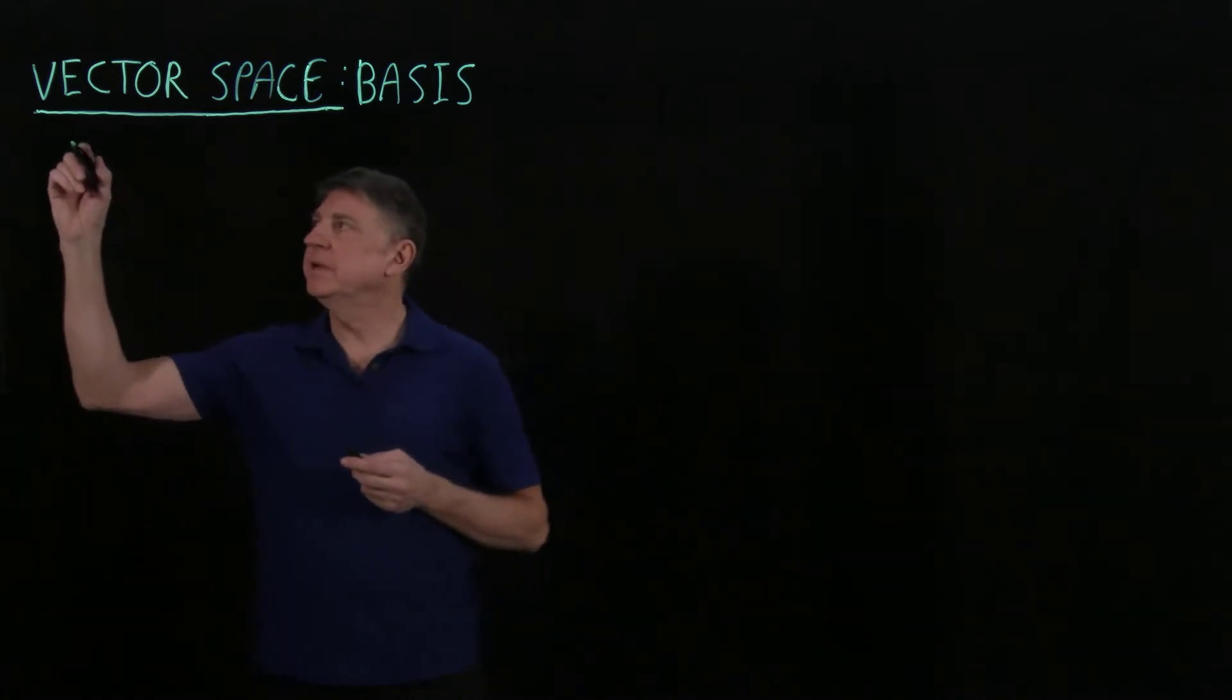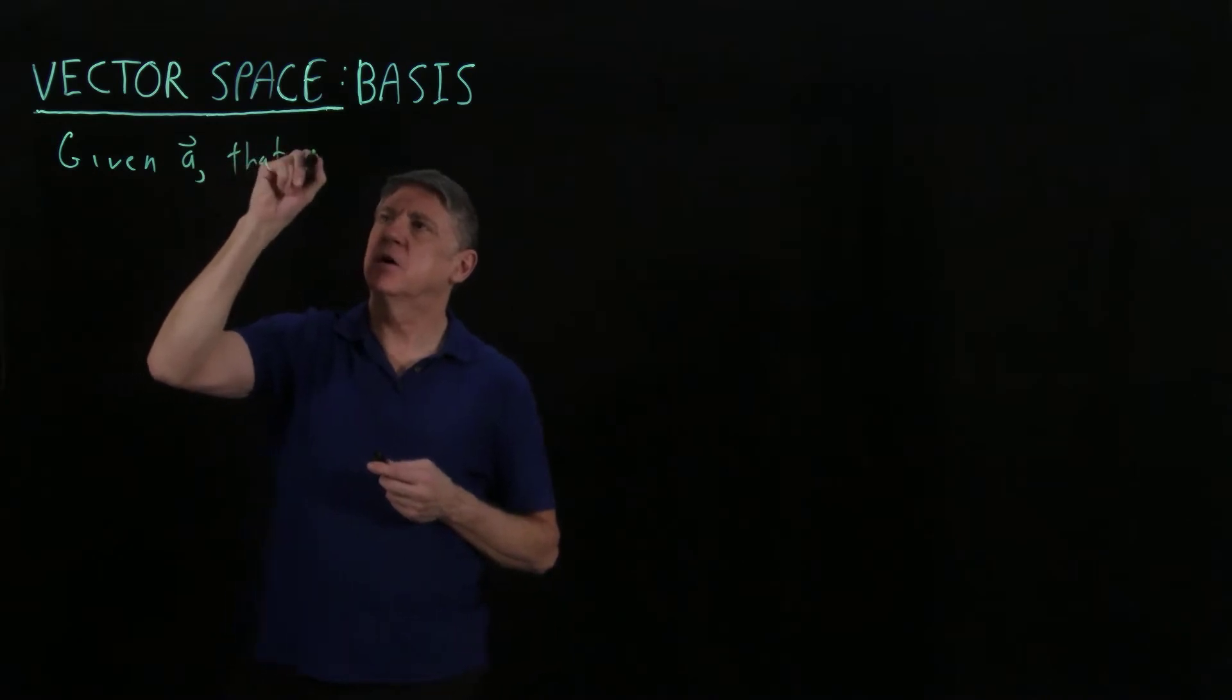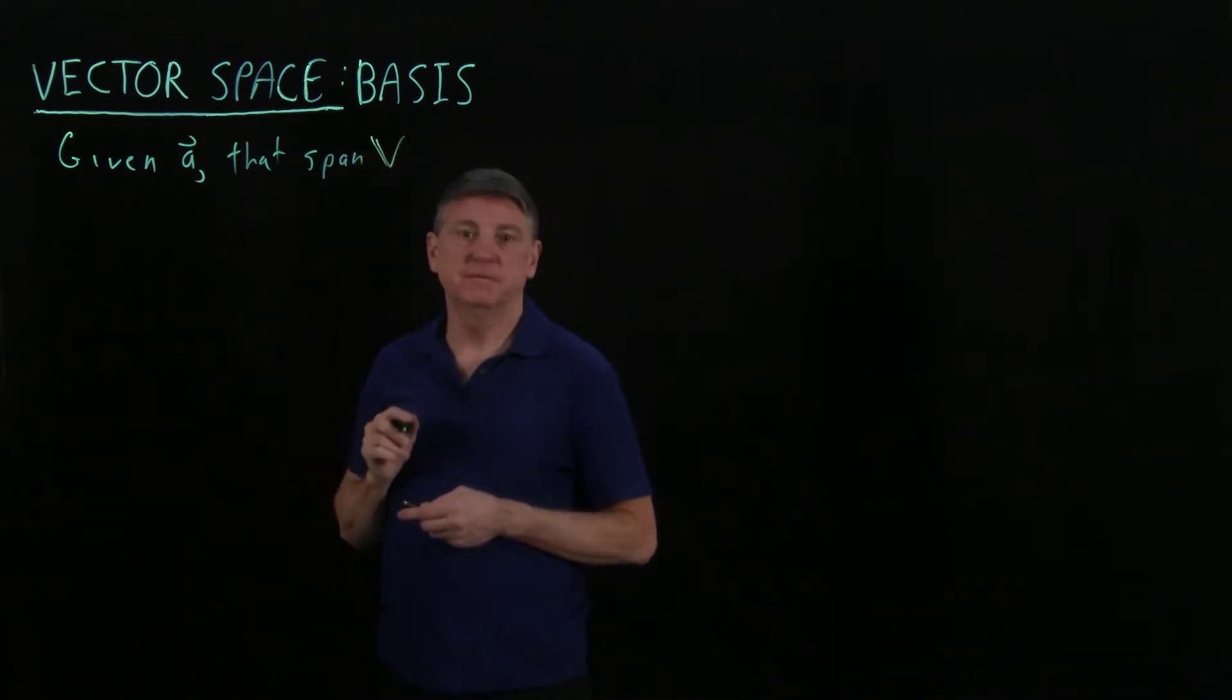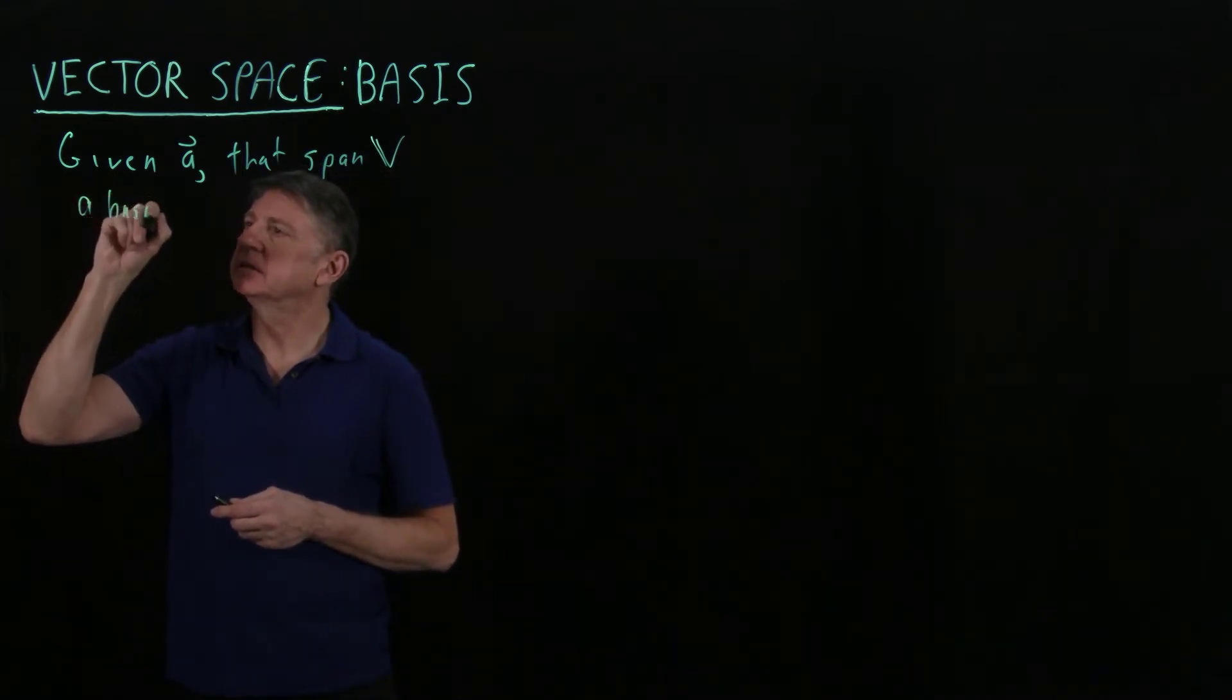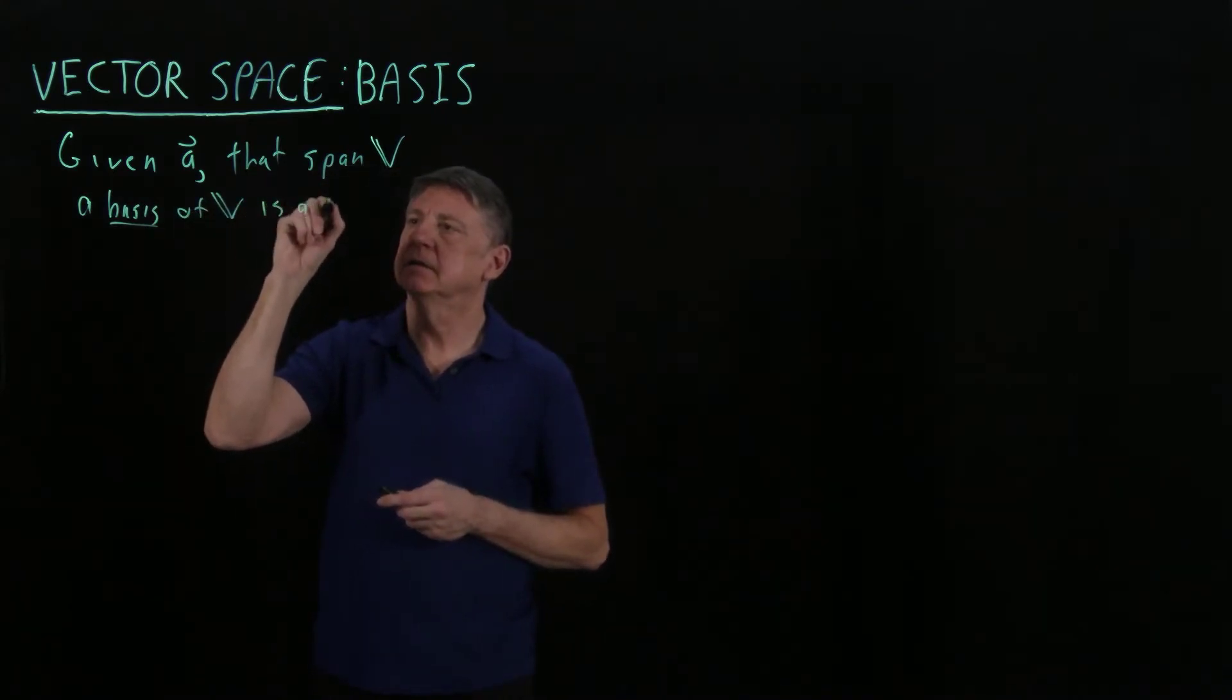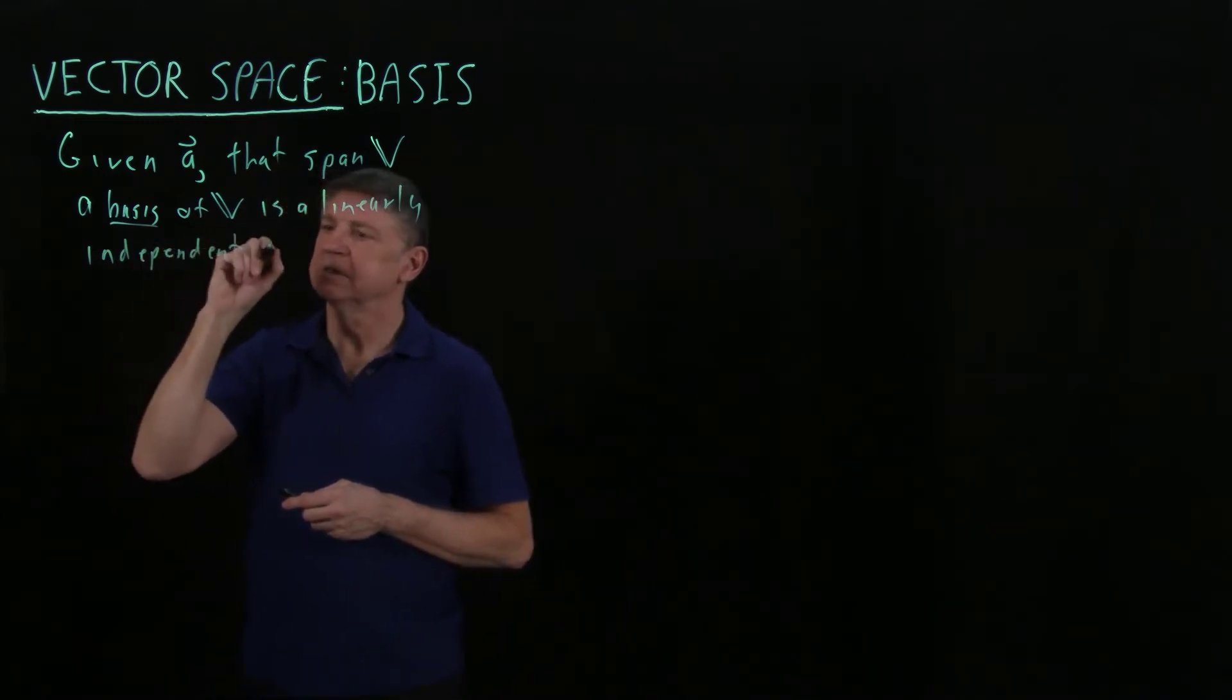If we're given a set of vectors A that are a span or a spanning set, or we will sometimes use the verb span a vector space V, then a basis of the vector space is a linearly independent spanning set.